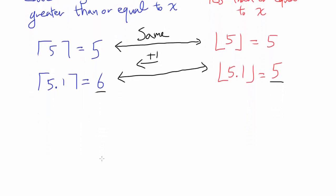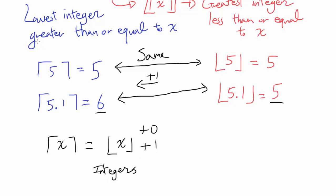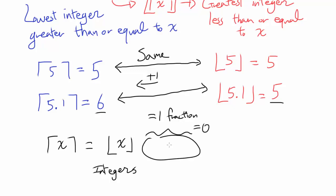So how can we modify this? Let's start with ceiling of x equaling floor of x. This works for integers, but for fractions it's not going to work out. For a fraction, you want to add 1, and for integers you want to add 0. So you want to find some expression that equals 1 when it's non-integer and equals 0 when it's an integer.